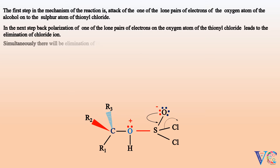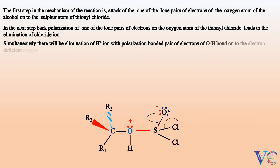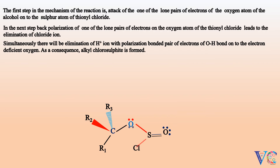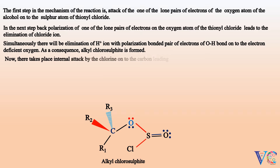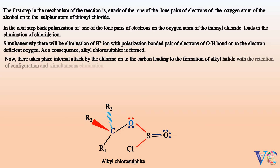Simultaneously, there will be elimination of H+ ion, with the polarization of the bonded pair of electrons of the OH bond onto the electron deficient oxygen. As a consequence, alkyl chlorosulfite is formed. Now, there takes place internal attack by the chlorine onto the carbon, leading to the formation of alkyl chloride with the retention of configuration, and simultaneous elimination of sulfur dioxide.